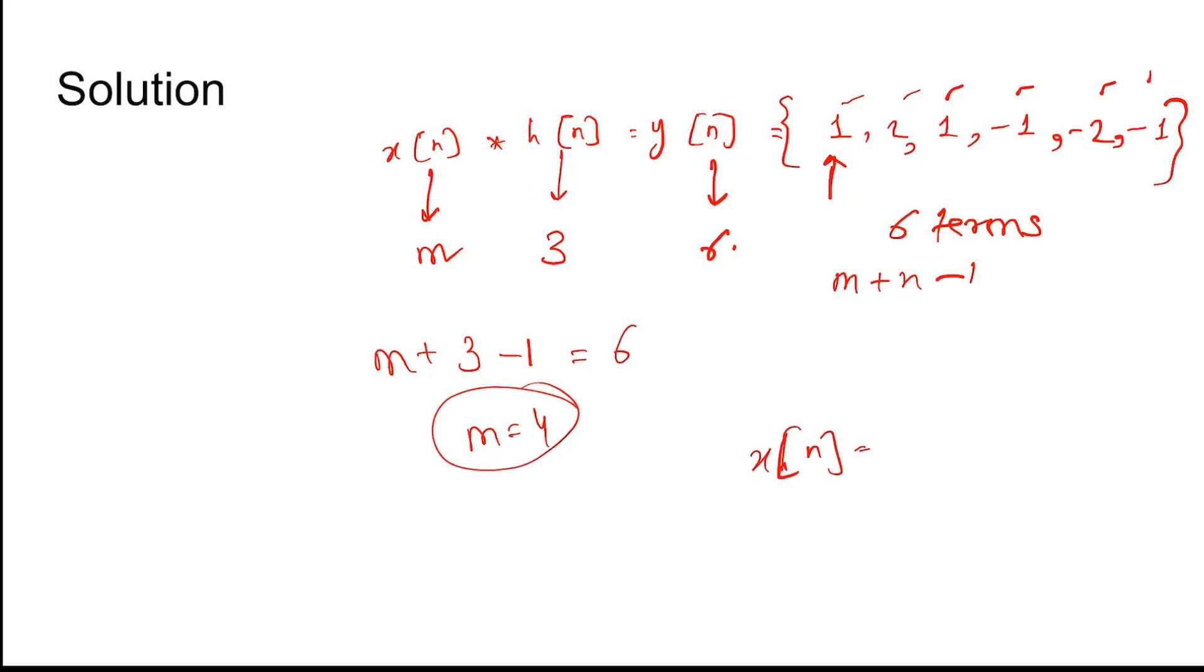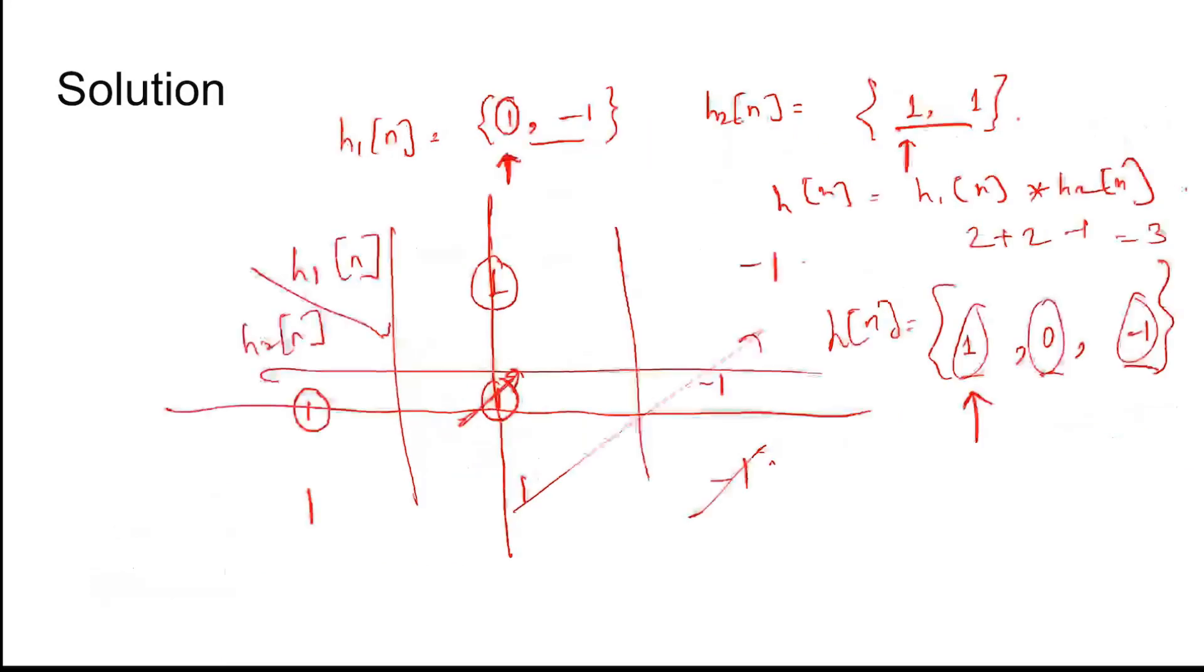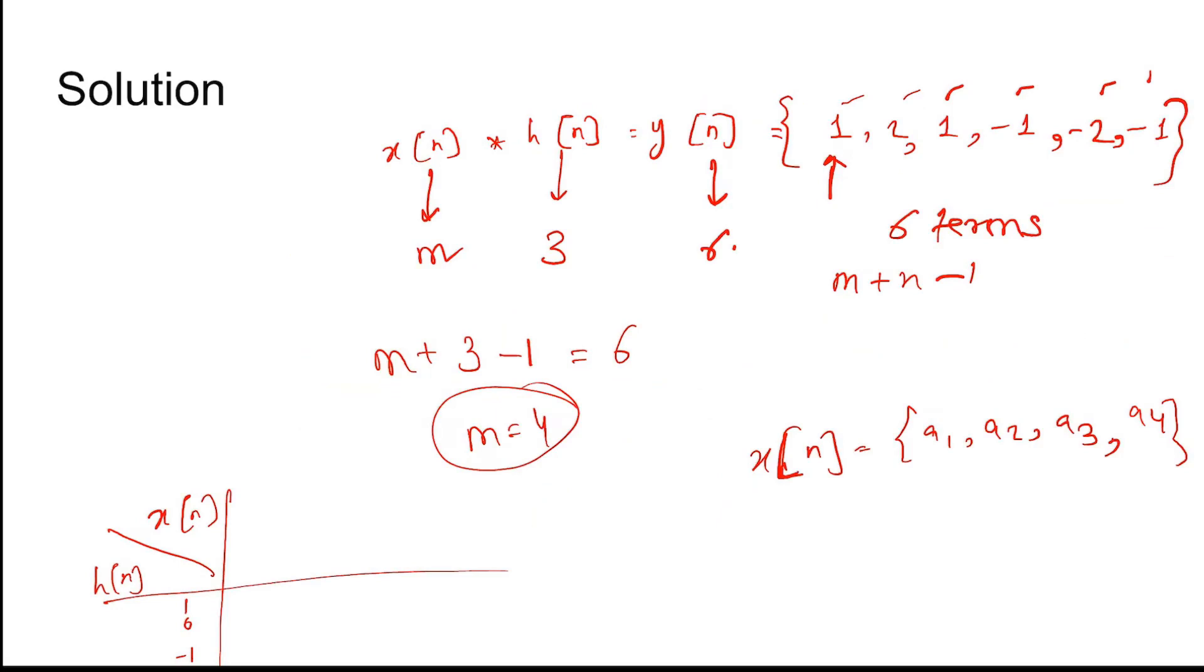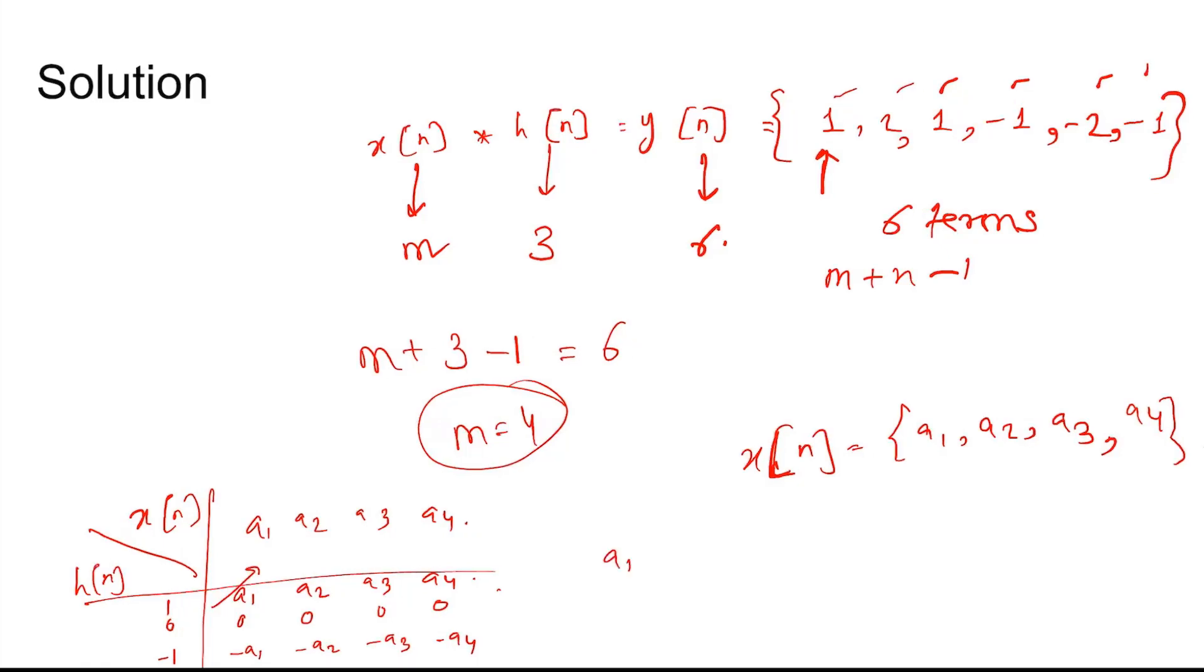x(n) can be assumed as {a1, a2, a3, a4}. x(n) convolution h(n) has 6 terms. h(n) has 3 terms: {1, 0, -1}, and x(n) has {a1, a2, a3, a4}. Setting up the convolution table: a1, a2, a3, a4, then 0, 0, 0, 0, then -a1, -a2, -a3, -a4. The convolution result becomes: a1, then a2, then a3 - a1, then a4 - a2, then -a3, and -a4.